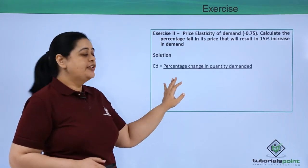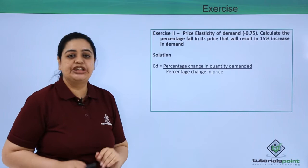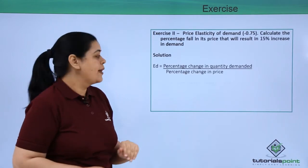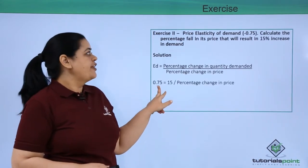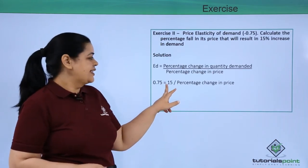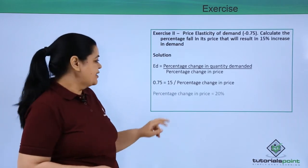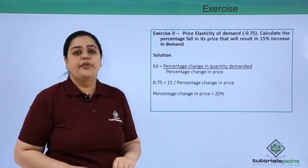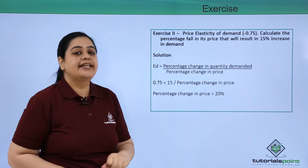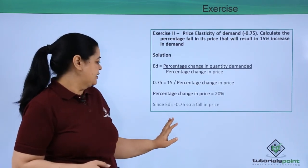Ed = percentage change in quantity demanded / percentage change in price. We know this formula. 0.75 = 15 / percentage change in price. When I substitute the numbers, the percentage change in price is 20%.